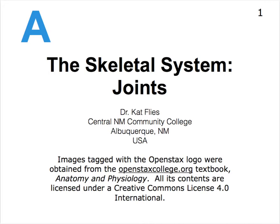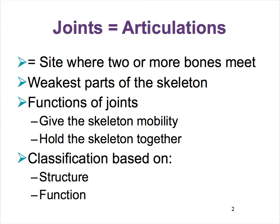I only have two videos on the joints, so this is a pretty brief topic. Before we classify the joints, let's make sure that we understand that joints can also be called articulations. If you think of that hyaline cartilage layer that covers the ends of long bones, that is called articular cartilage. So that implies that this layer of cartilage forms a joint with another bone.